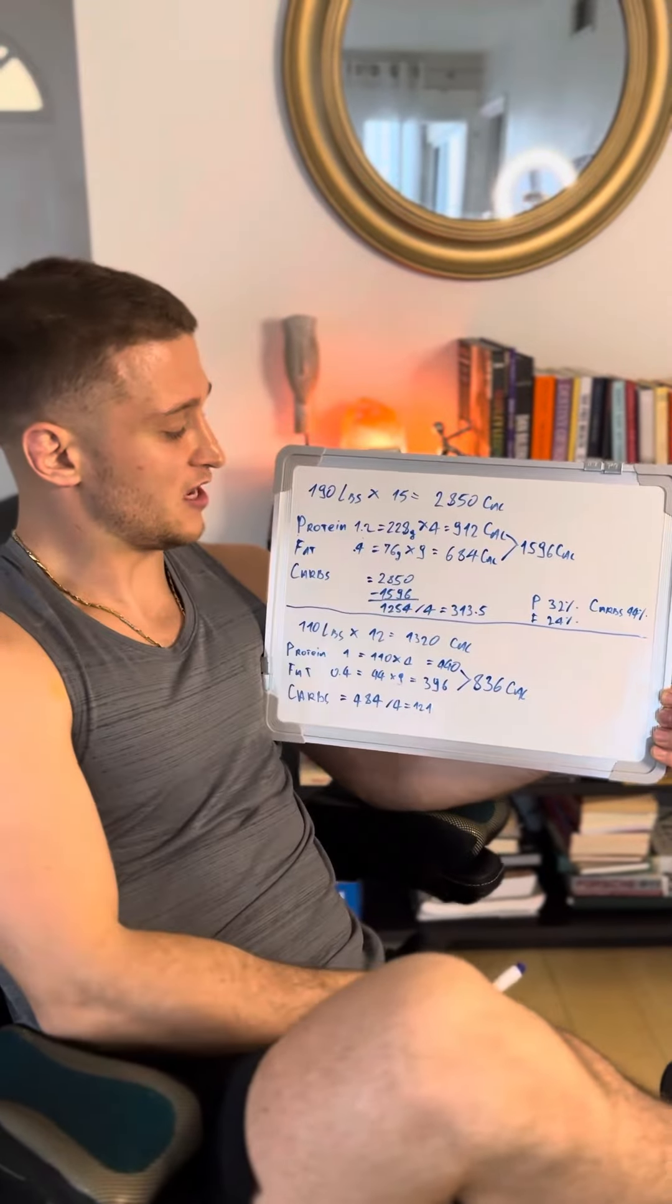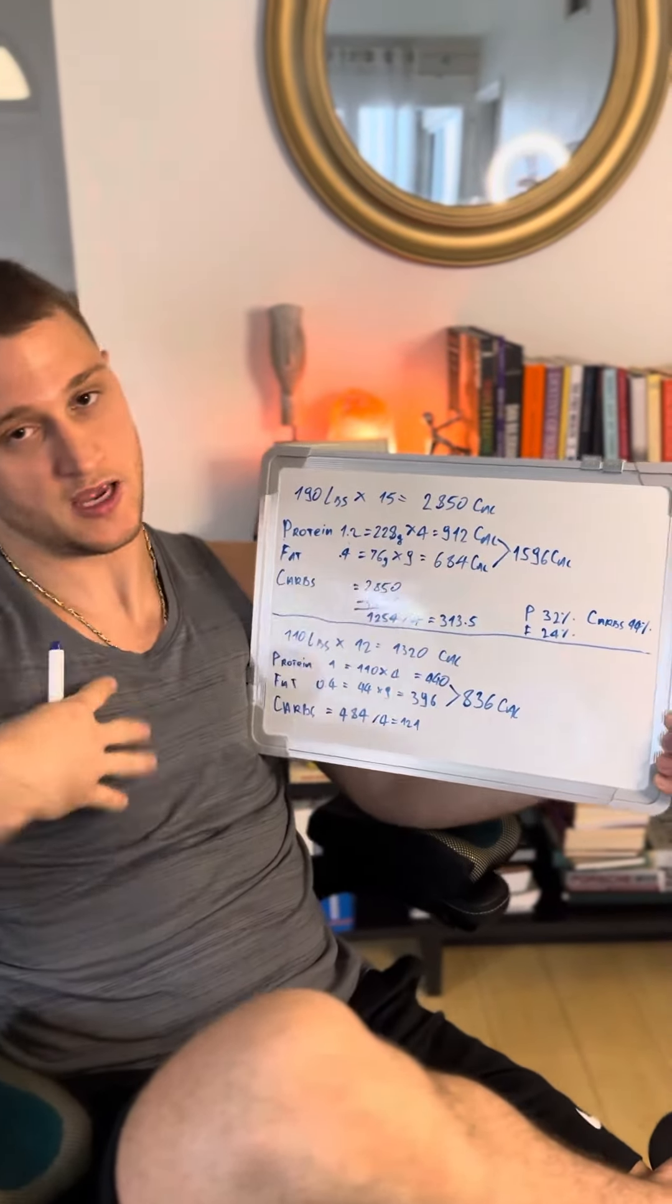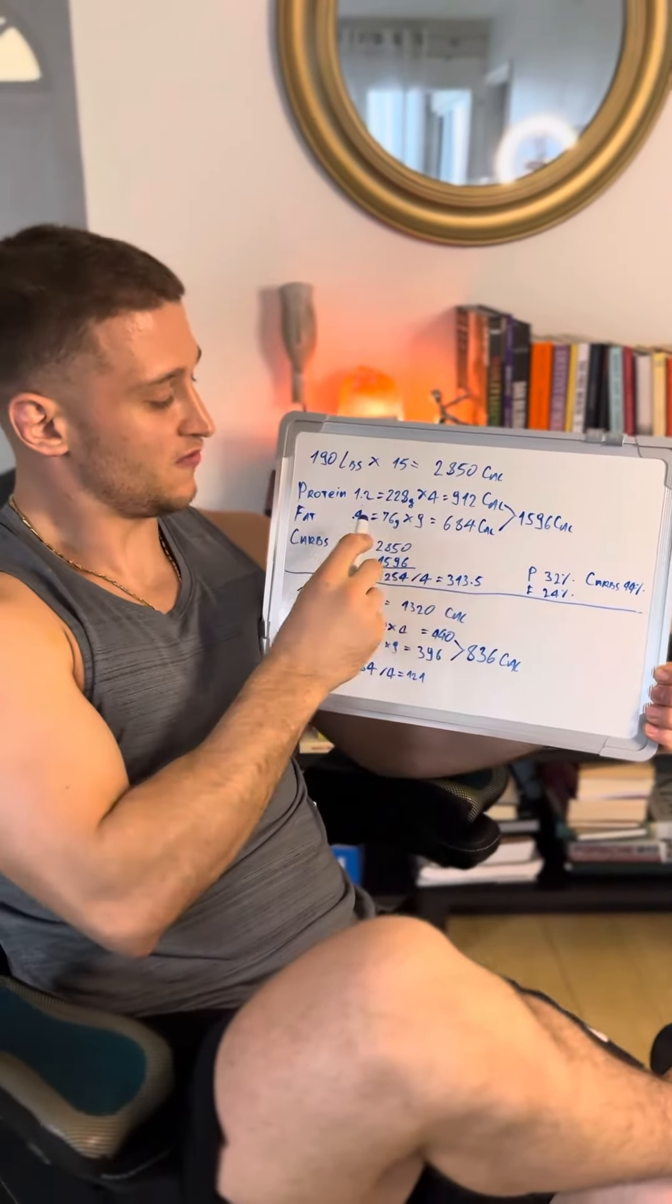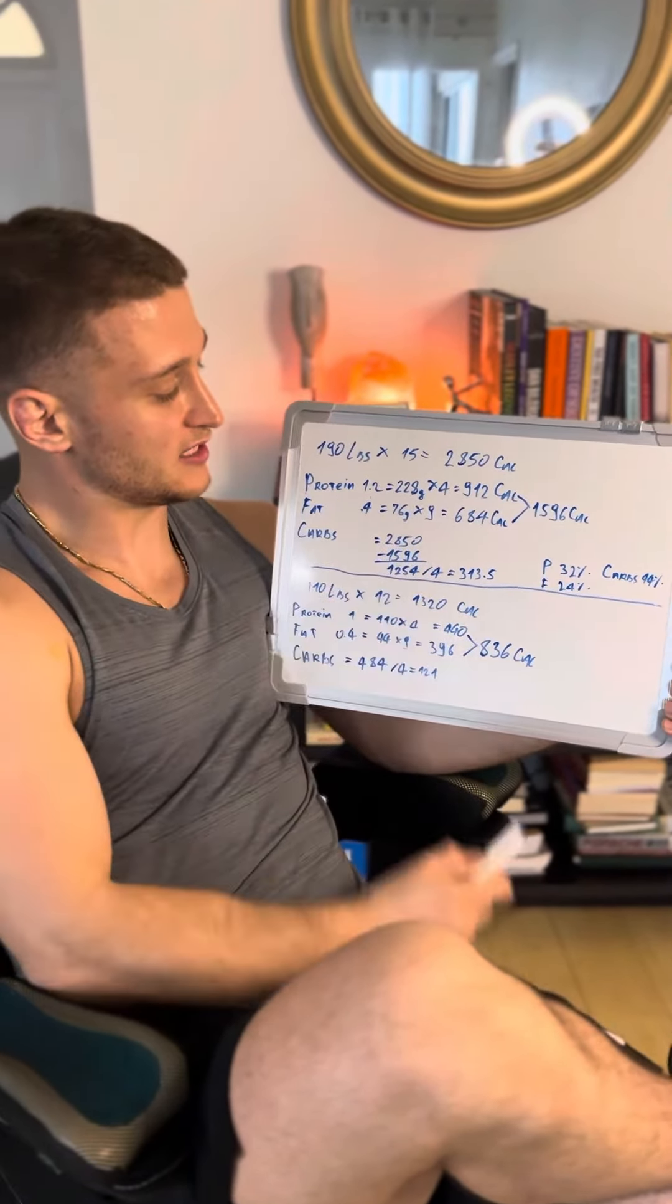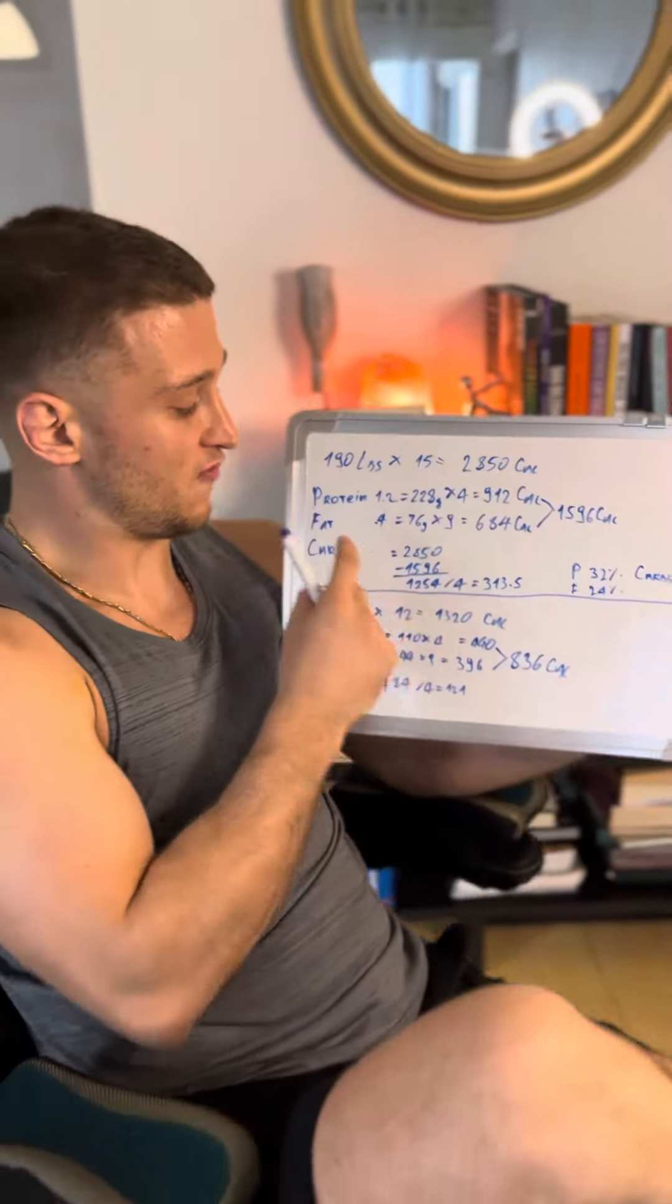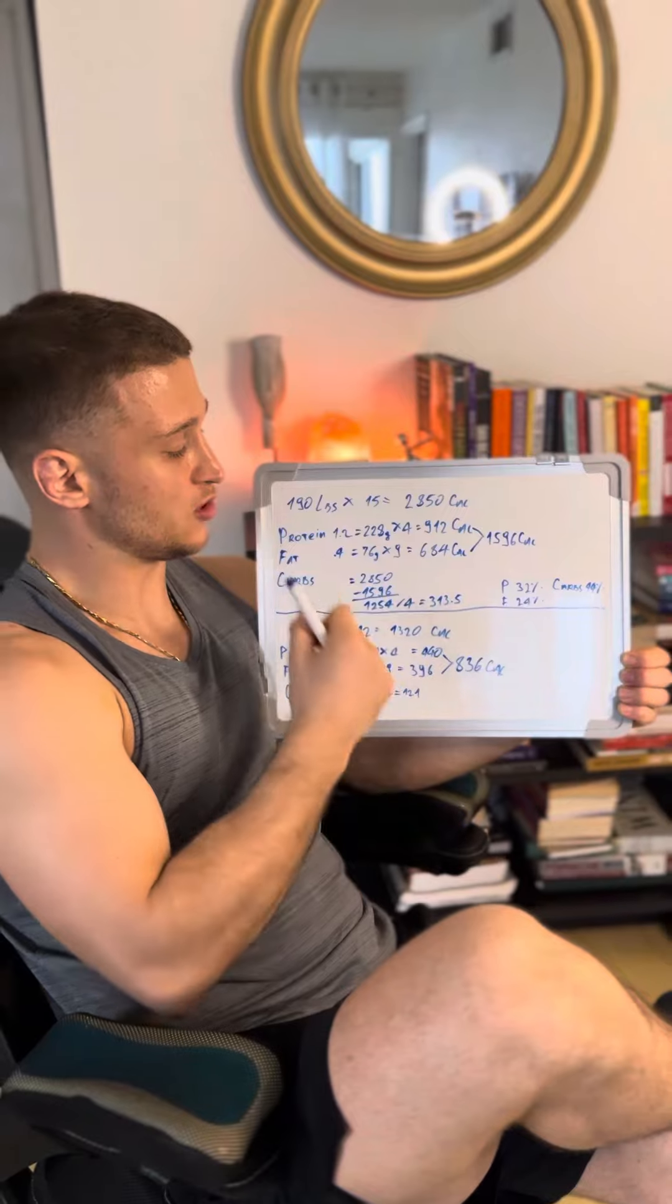When it comes to fats, I should be eating 0.4, not just me, everybody should be eating 0.4 grams of fat per pound of weight. So, if I multiply 0.4 with 190, I'm going to get 76, and I'm going to multiply that with 9 because 1 gram of fat is equivalent to 9 calories because fat is more dense.